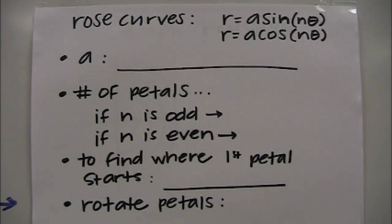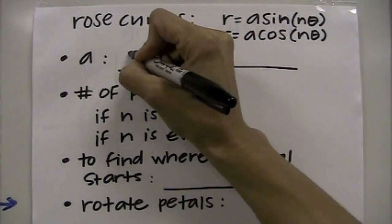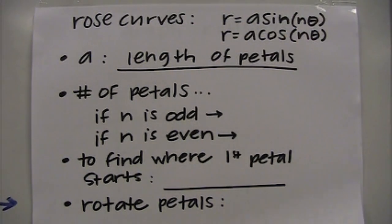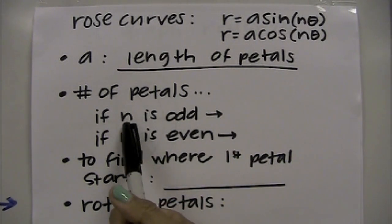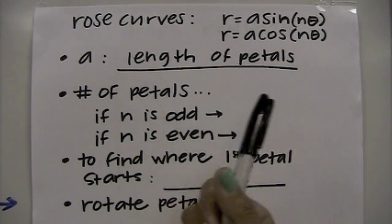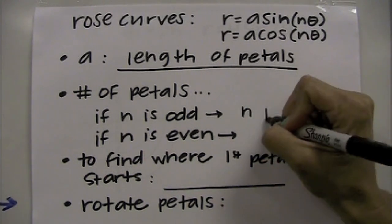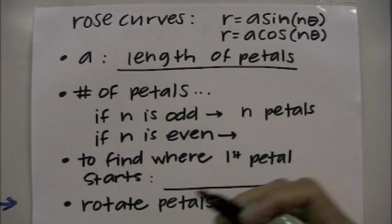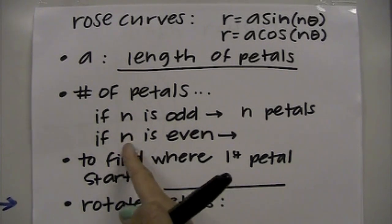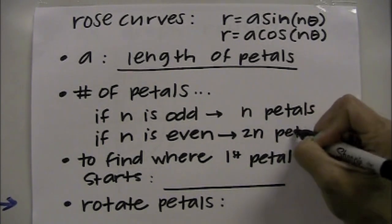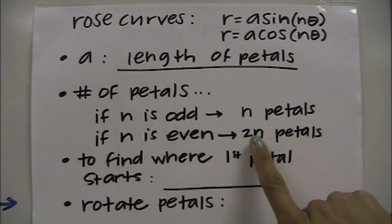A indicates the length of each petal. To determine the number of petals, you identify the value for n. If n is odd, you have that same number of petals — so if n is 3, you have 3 petals. If n is even, for example n equals 4, you have double the amount of petals, represented as 2n petals. So if n is 4, you would have 8 petals.